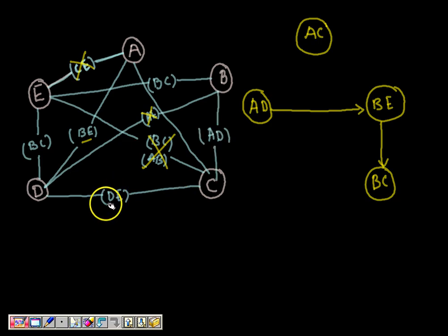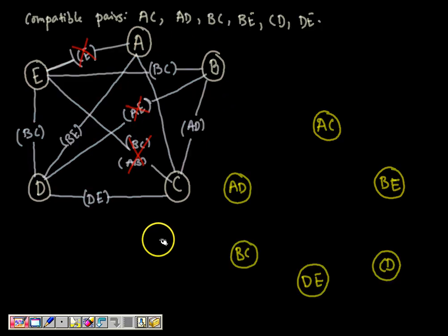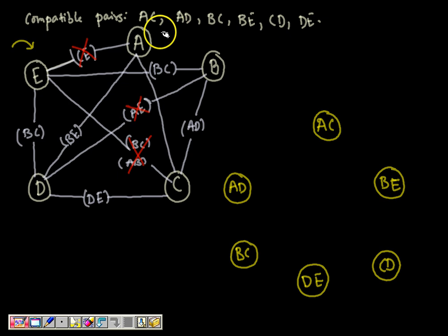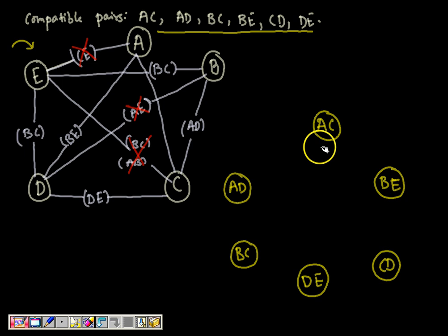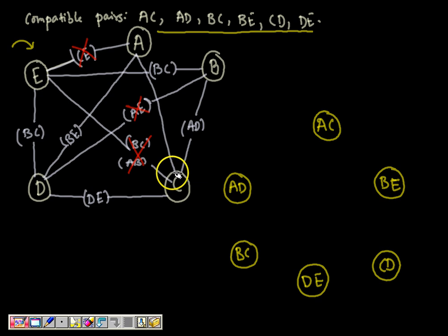Here is how we develop the compatibility graph from the merger graph. We have already developed the merger graph, and the compatible pairs are AC, AD, BC, BE, CD, and DE. Each of these compatible pairs is a vertex in the compatibility graph, giving us six vertices. Since AC is compatible without any interruption, it has no implied pair, so no outgoing arc emerges from AC.